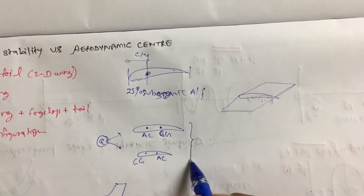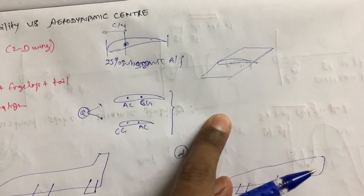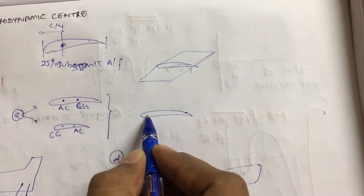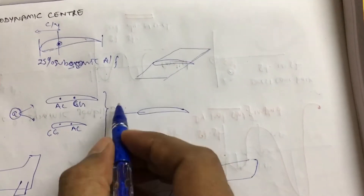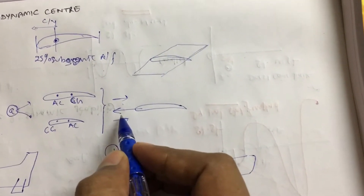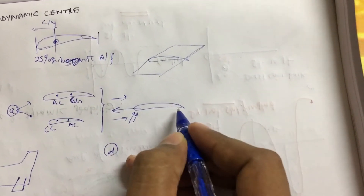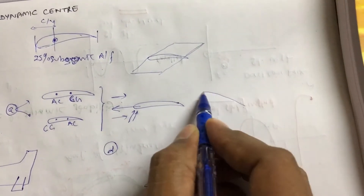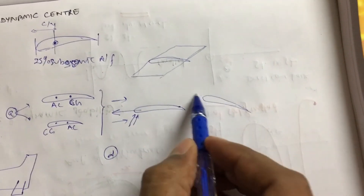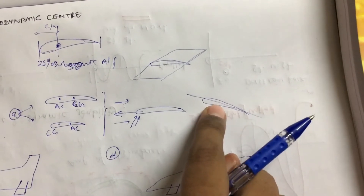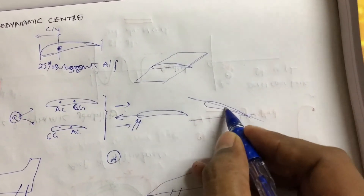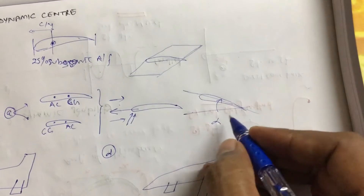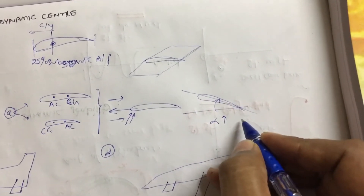We are going to discuss about stability. Suppose you have an airfoil flying in the air with free stream coming. Because of some gust, this airfoil will turn. Because the airfoil is tilted, the angle of attack got increased. The angle of attack alpha got increased, so lift will increase. If alpha is increasing, lift will increase.